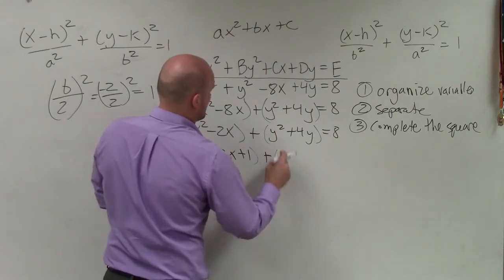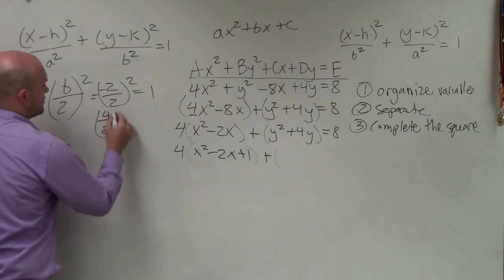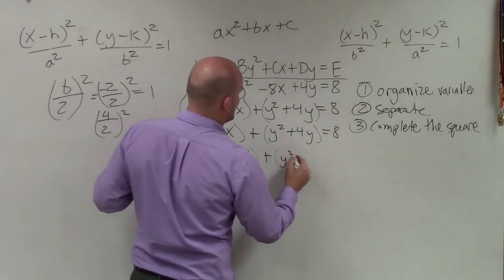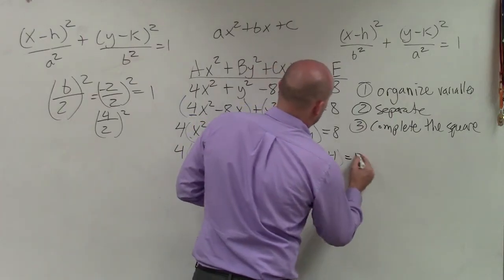And then plus, here, I take 4 divided by 2 and square it. 4 divided by 2 is 2. 2 squared is 4. So I have y² + 4y + 4 equals 8.